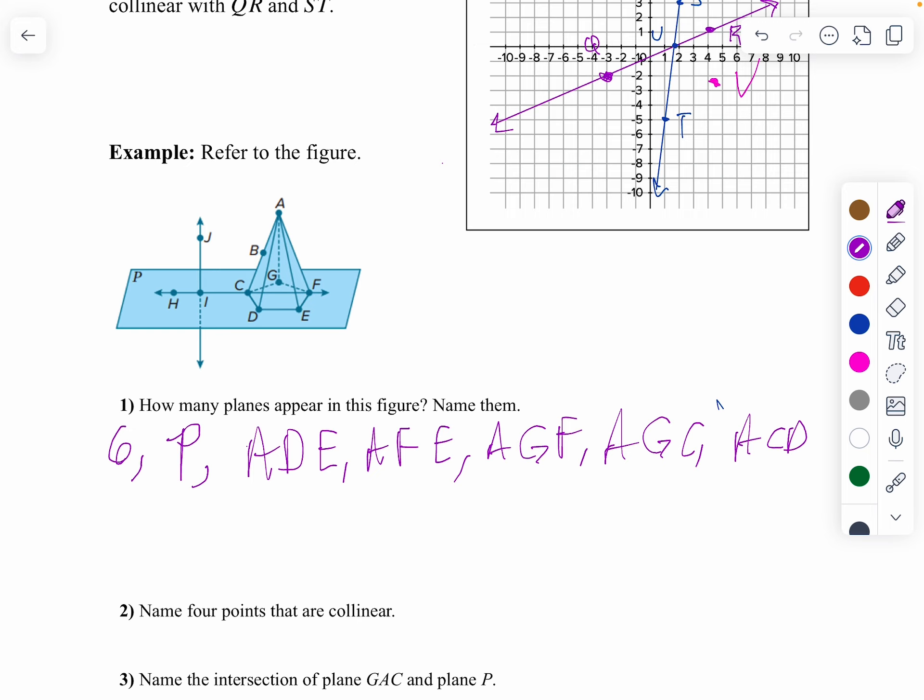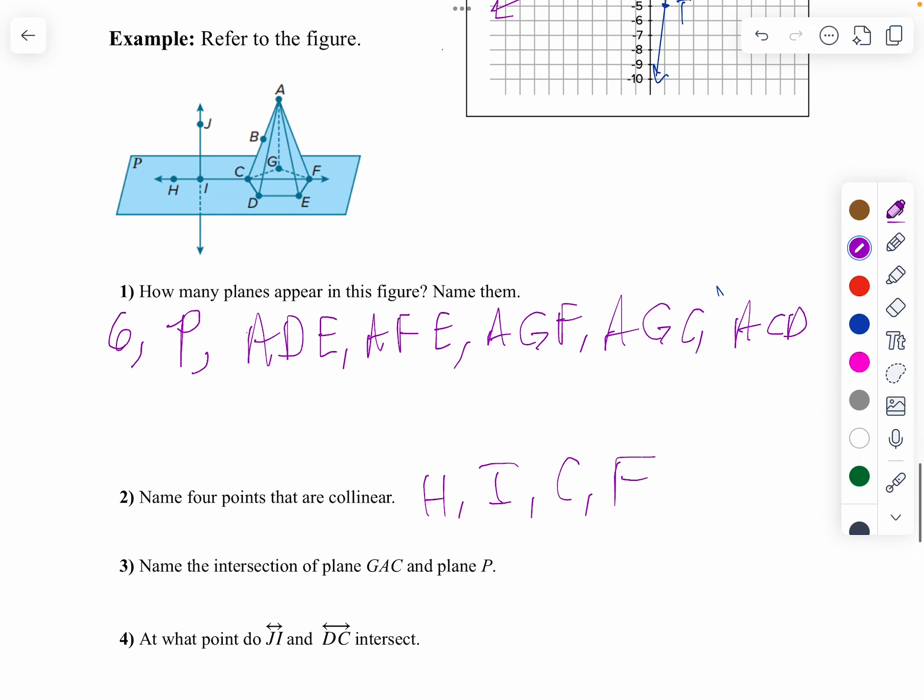Name four points that are collinear. I want four points that lie on the same line. So H, I, C, and F. They all lie on the same line.